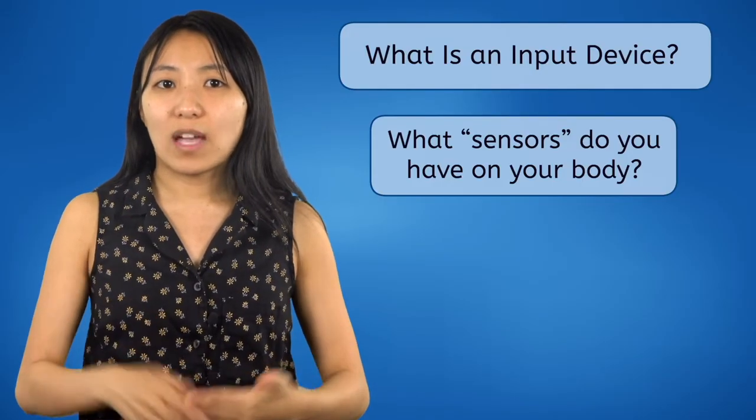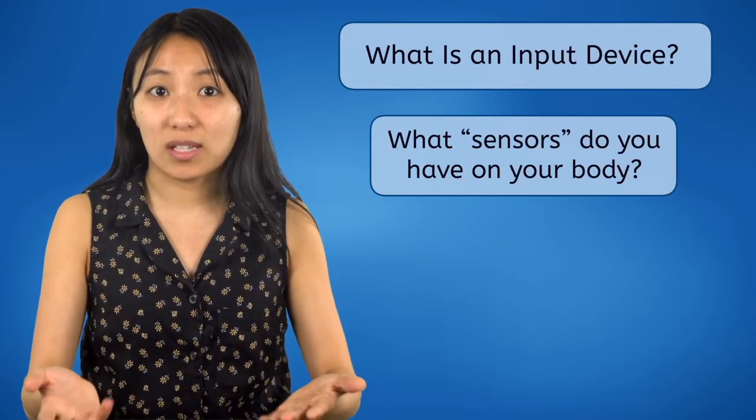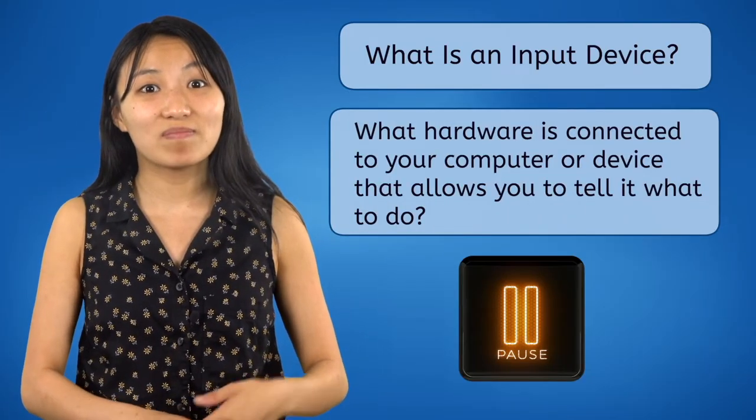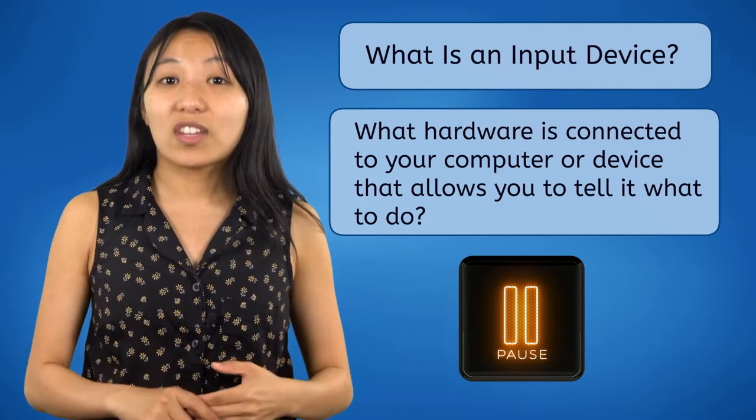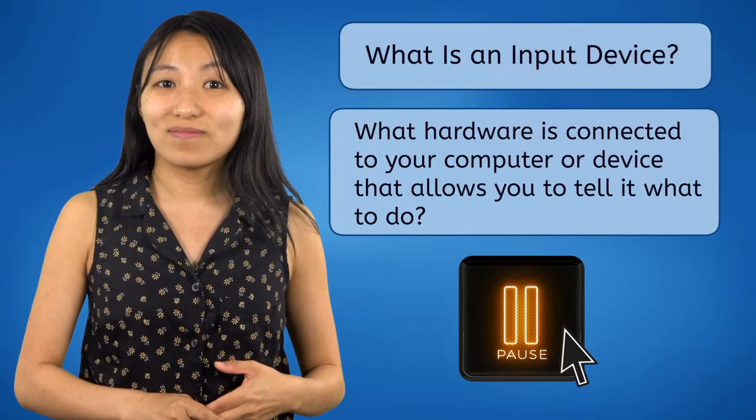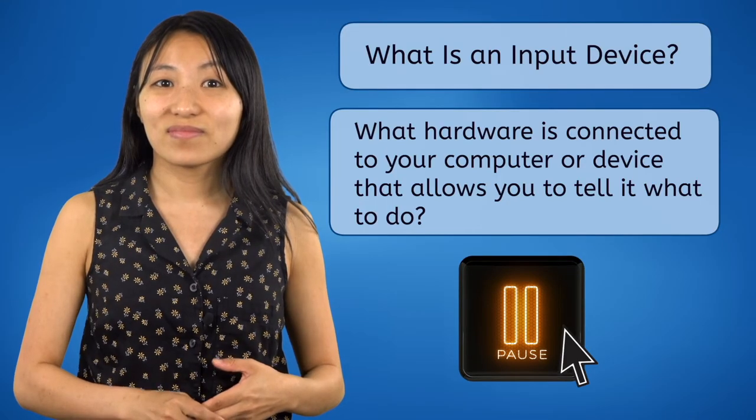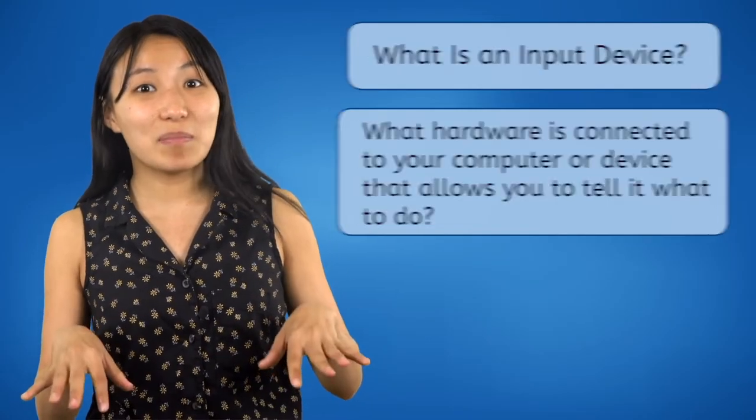Let's switch the question around. After all, this lesson isn't about your sensory organs, it's about a computer's input devices. Pause the video and answer this question in your guided notes. What hardware is connected to your computer or device that allows you to tell it what to do? You probably used an input device just now to pause and then unpause this video. Maybe you clicked a mouse, or maybe you pressed a key on a keyboard. If you're on a tablet or phone, maybe you touched a touchscreen. You could even be watching this on a game console and pause the video by pressing a button on the controller. These are all input devices and there are so many more out there.